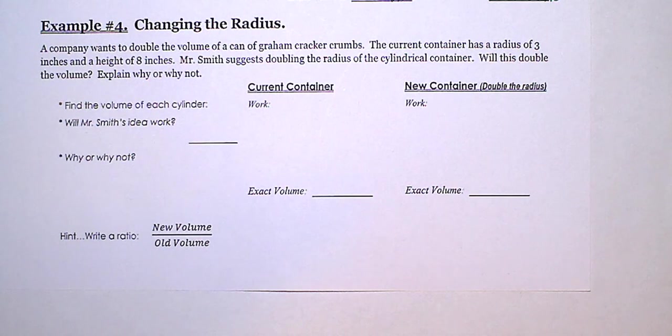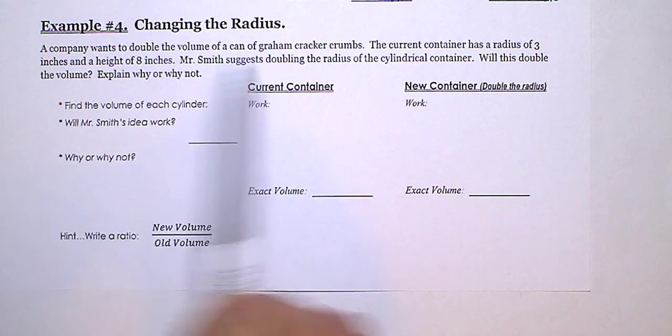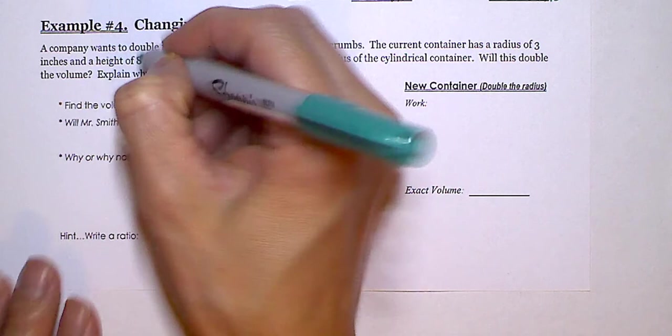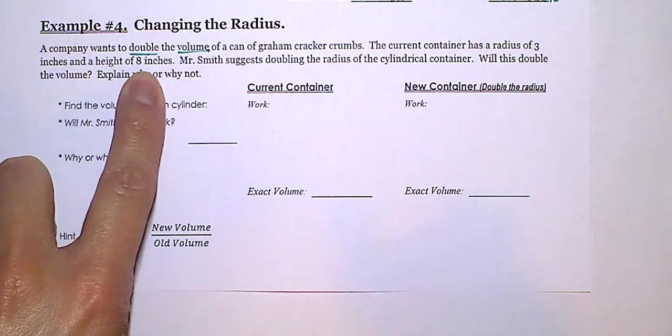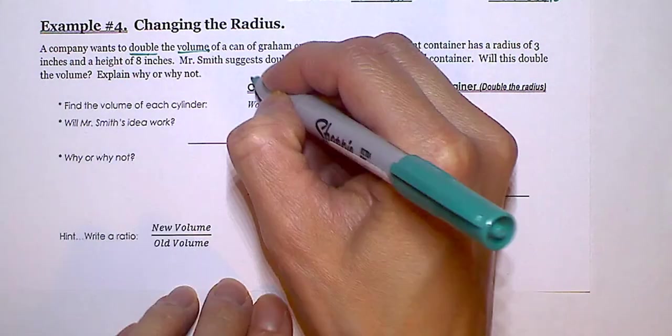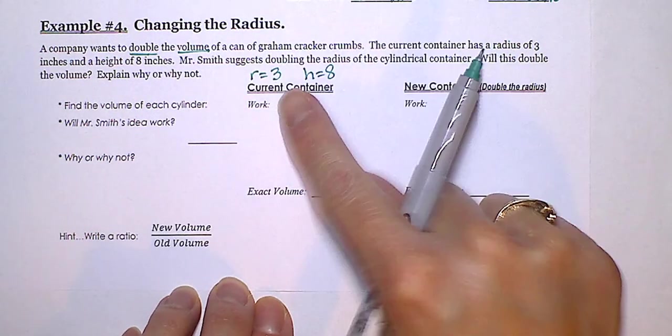So a company wants to double the volume of a can of graham cracker crumbs. So we want to double the volume. The current container has a radius of 3 inches and a height of 8. So I'm just going to write down what I know so far.